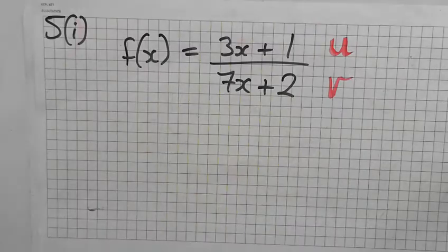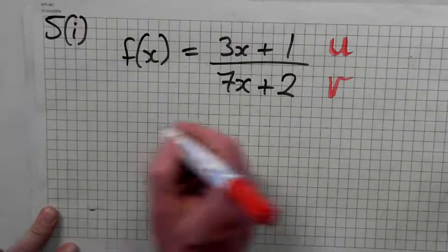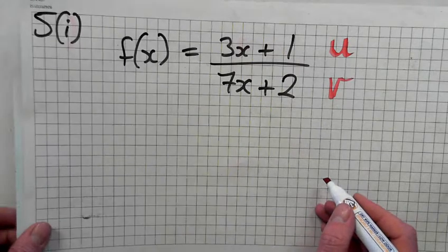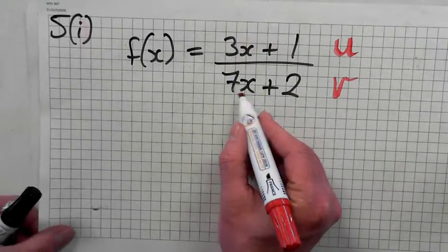Are you ready? Alright, u is equal to 3x plus 1. I'm not even going to write it down. v is equal to 7x plus 2.